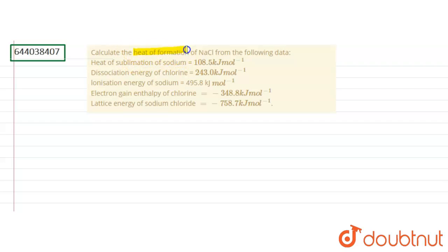Heat of sublimation of sodium is 108.5 kilojoule per mole, dissociation energy of chlorine is 243 kilojoule per mole, ionization energy of sodium is 495.5 kilojoule per mole, electron gain enthalpy of chlorine is minus 348.8 kilojoule per mole, and lattice energy of sodium chloride is minus 758.7 kilojoule per mole.